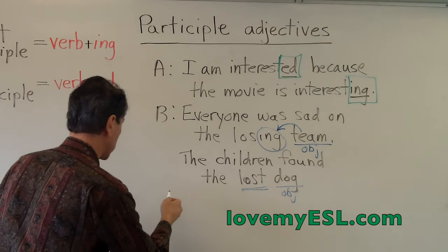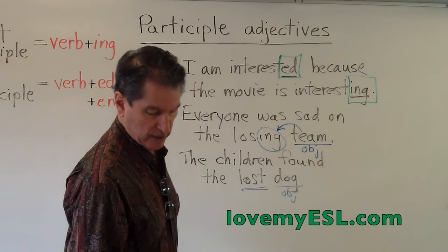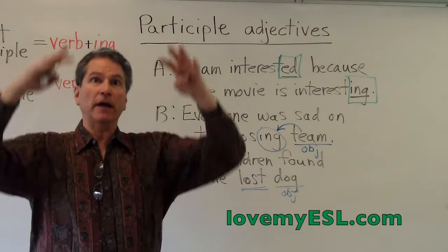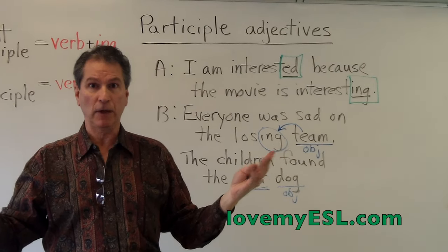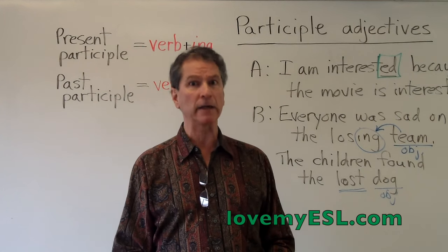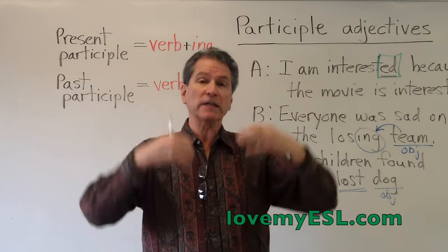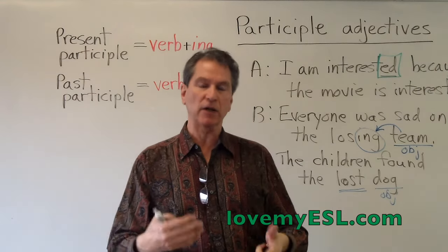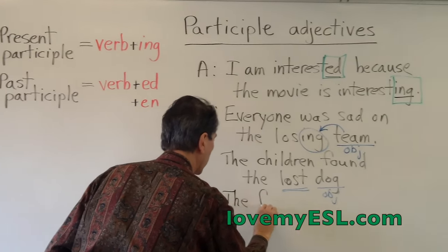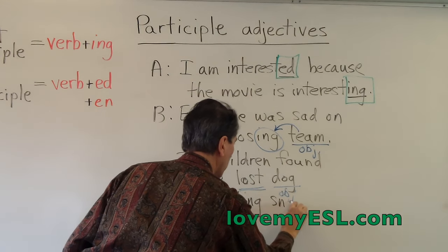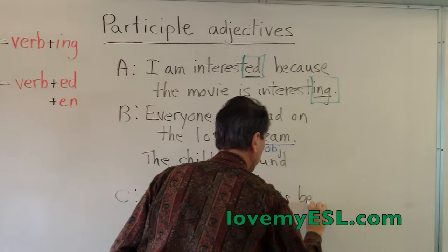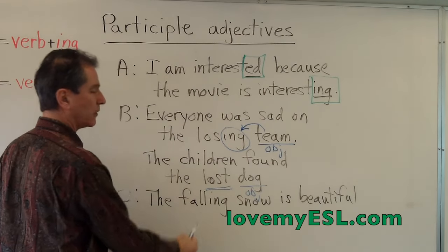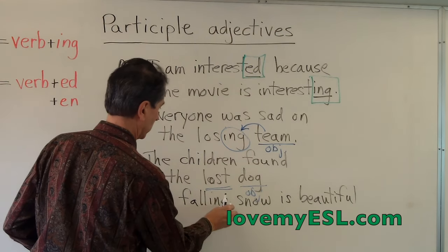The third rule is when something is happening at that time. If the snow is falling, you say: 'the falling snow made everything look white.' But if the snow is already on the ground, you say: 'the fallen snow is 30 centimeters deep.' The falling snow is happening at the same time I'm saying it — it's falling right now. The fallen snow fell yesterday; it's not snowing today. So when something is happening right now, it's -ing. When it already happened, it's the past participle form.